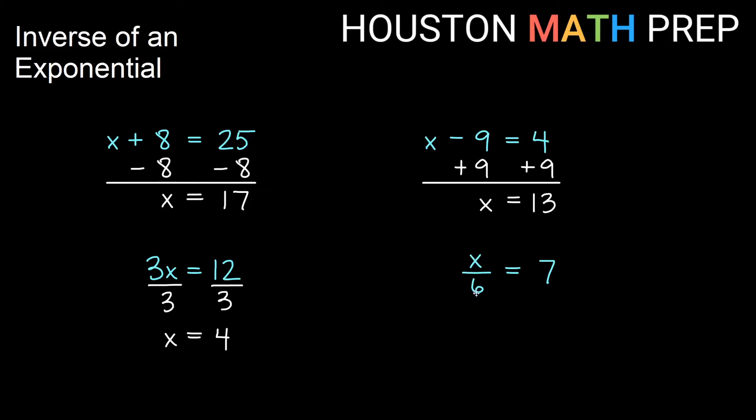Over here you have x divided by 6 equals 7. So we want to undo divide by 6. The opposite of divide by 6 is multiply by 6. So we do that to both sides, and we get an answer that x equals 42.